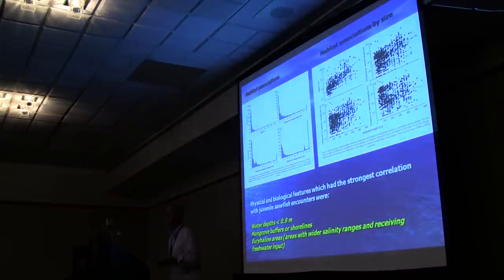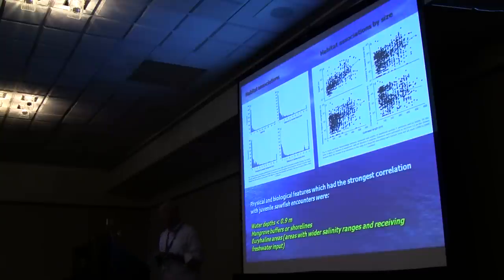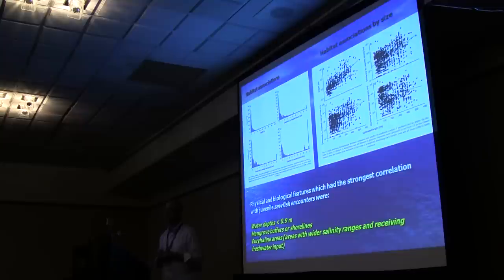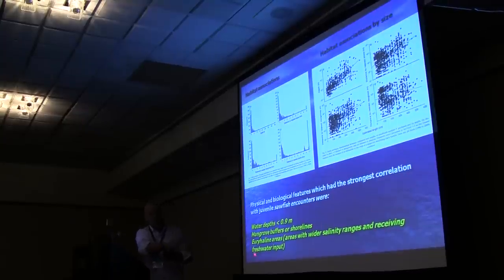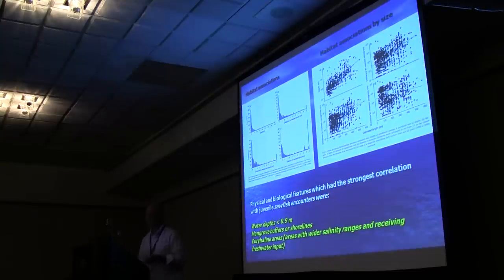This data was very useful for us in gleaning habitat requirements needed to recover the species. The take-home message from all the encounters reported is that the physical and biological features with the strongest correlation were: sawfish were generally reported in water depths less than about a meter, there was very strong correlation with areas that had mangrove buffers or mangrove shorelines, and they were generally found in areas with variable salinity — euryhaline areas. This was a big step for us, because as I keep mentioning, we didn't know anything, and now we have some quantitative data to go on.